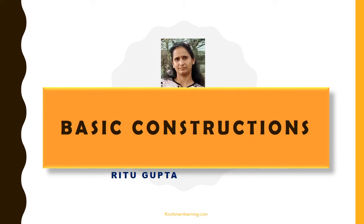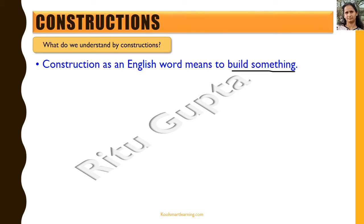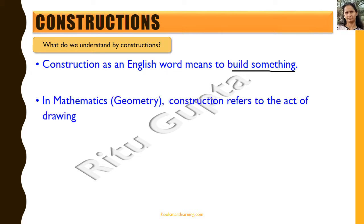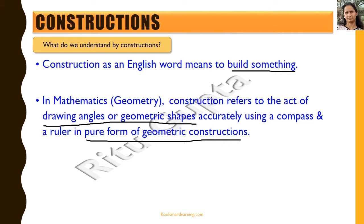Hello friends, we are going to talk about basic constructions in this session. Let's first see what we understand by constructions. The word construction means to build something. In mathematics, construction means that we draw angles or geometric shapes accurately using a compass and a ruler. This is the pure form of geometric construction, where only compass and ruler are used to draw shapes accurately.